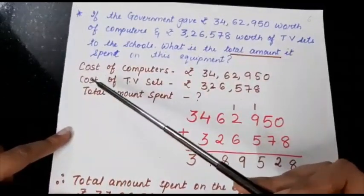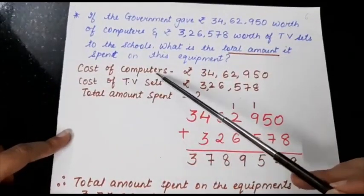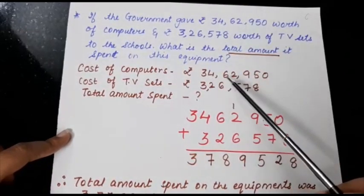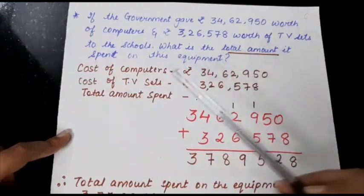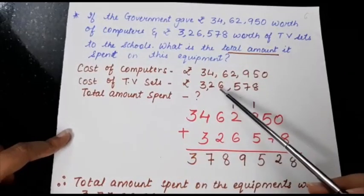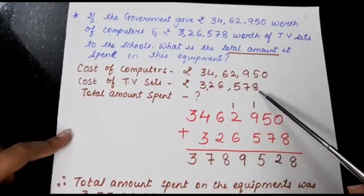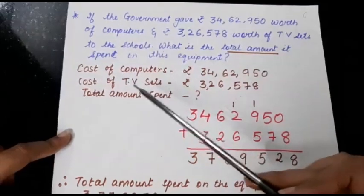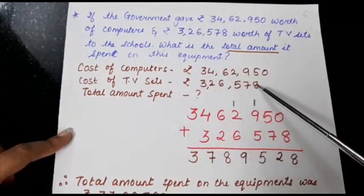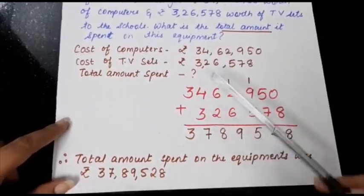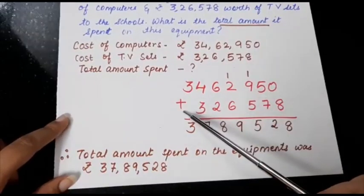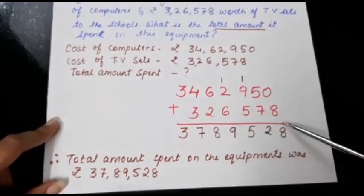So first statement will be cost of computers. What is the cost of computers that is given? 34,62,950. Cost of TV sets is given what? 3,26,578. What do we have to find out? We have to find out total amount spent. So we will add both these things. We have written the numbers here. Put the addition sign. Start from the end.